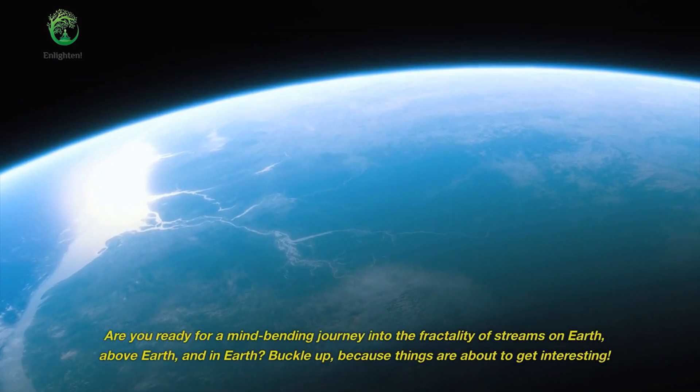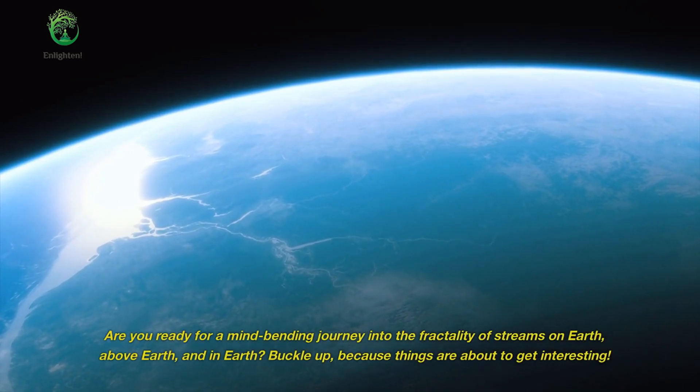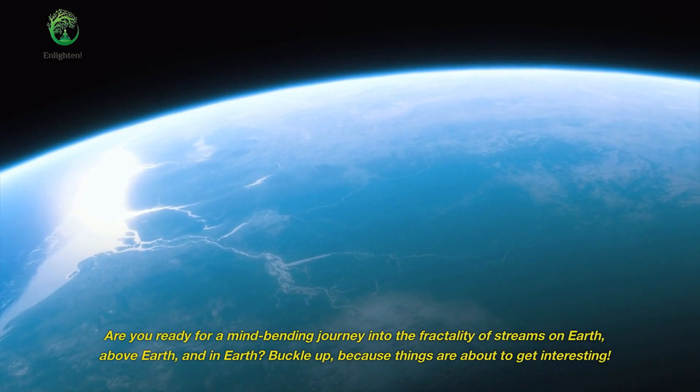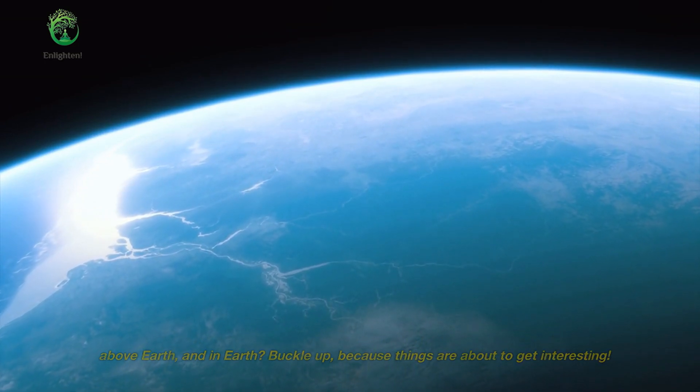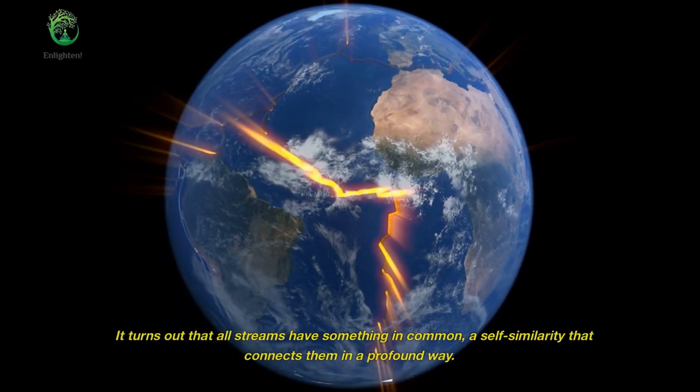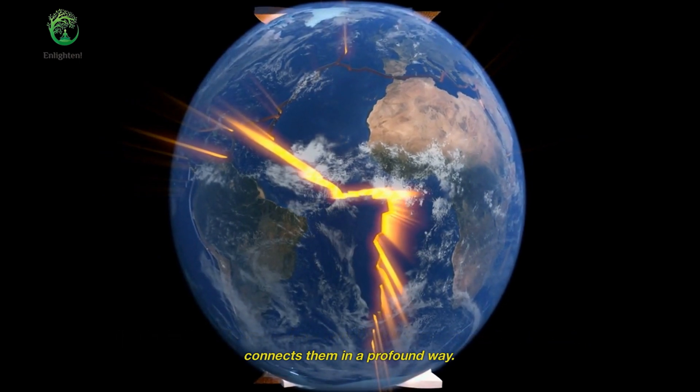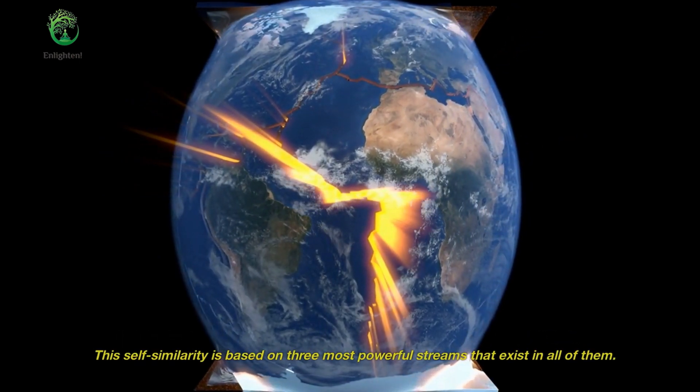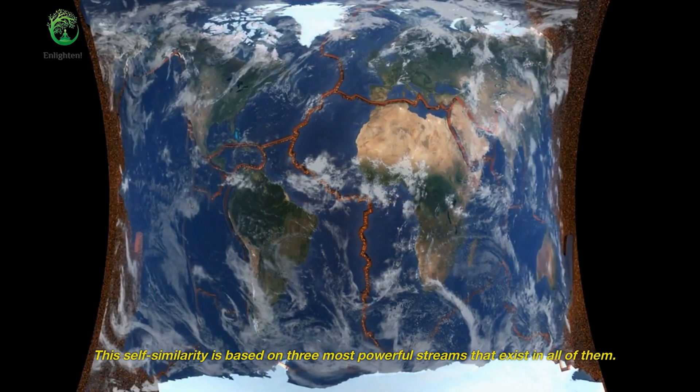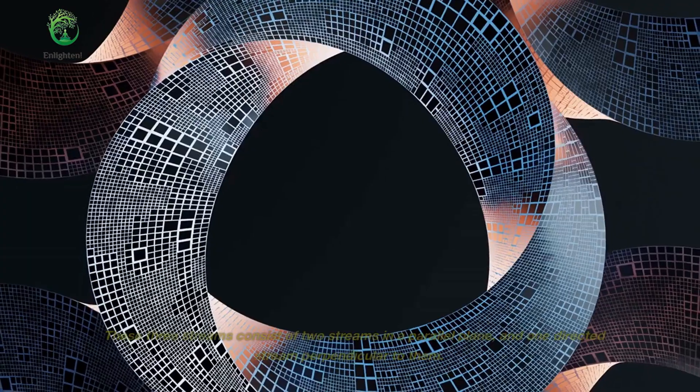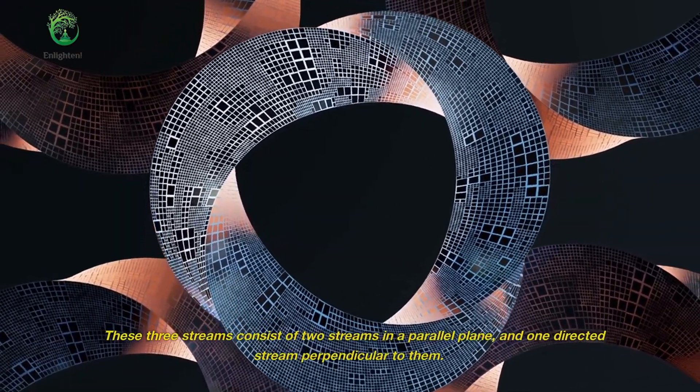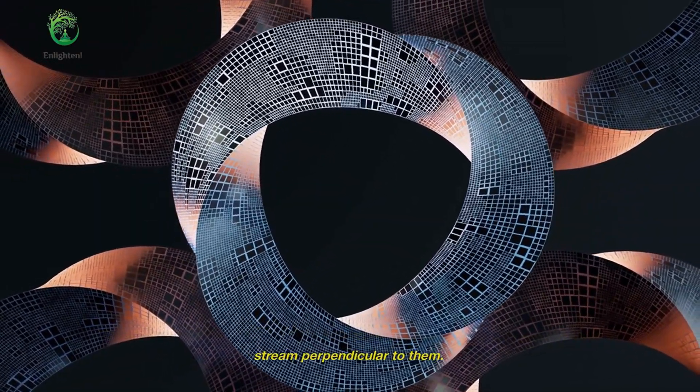Are you ready for a mind-bending journey into the fractality of streams on Earth, above Earth, and in Earth? Buckle up, because things are about to get interesting. It turns out that all streams have something in common, a self-similarity that connects them in a profound way. This self-similarity is based on three most powerful streams that exist in all of them. These three streams consist of two streams in a parallel plane, and one directed stream perpendicular to them.